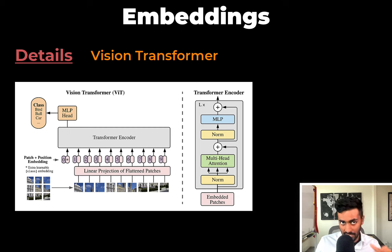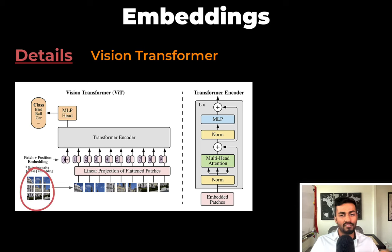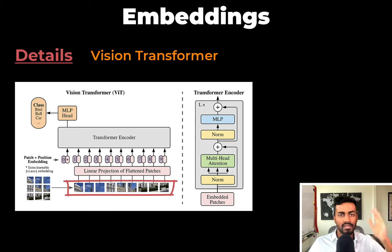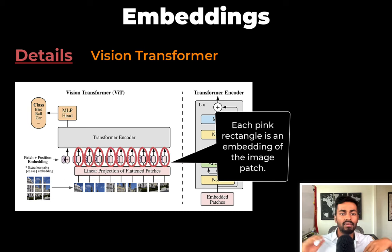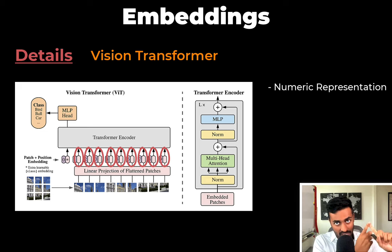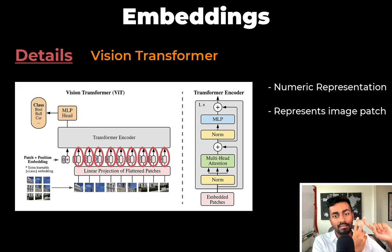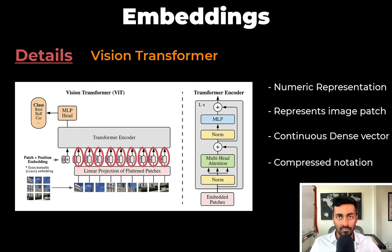Here's another application: the vision transformer — a modified transformer architecture to process images. It is modified to take in an image and output some classification of the image. This is done by breaking the input image up into 16×16 image patches, which are then passed through the feed-forward layer. We end up with a vector in the pink rectangle, which is an embedding. These embeddings also have the same characteristics: each is a numerical representation of the input, each semantically represents the image patch, each is a continuous dense vector, and each is a compressed notation of the original data.